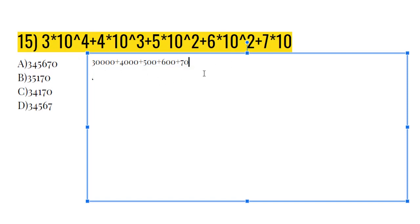And then you would add that with 30,000, which would get you 31,170.